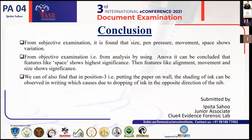In conclusion, from subjective examination it is found that size, pen pressure, momentum, and space show variation. From objective examination using ANOVA, it can be concluded that the feature of space shows the highest significance compared to features like alignment, momentum, and size. It was also found that in position three — putting paper on the wall — shading of ink can be observed in writing, caused by ink dropping in the opposite direction. Thank you.